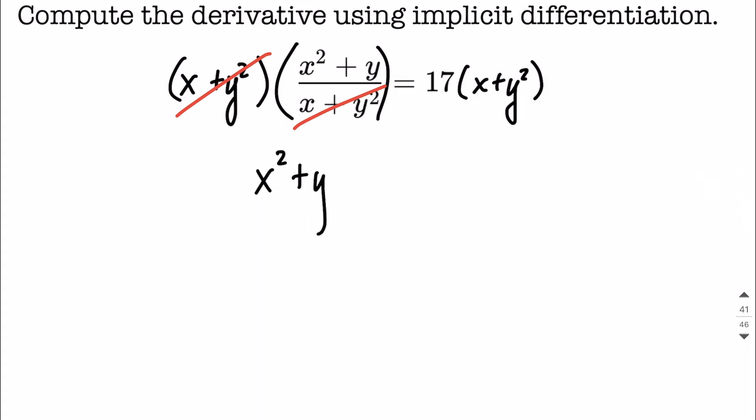Now we're left with x squared plus y on the left-hand side. I'm going to go ahead and distribute and say 17x plus 17y squared on the right-hand side. Just taking that 17 to each one of those terms on the inside of our parentheses.